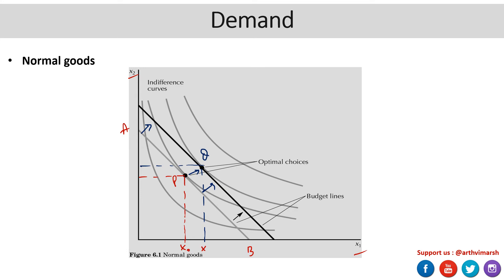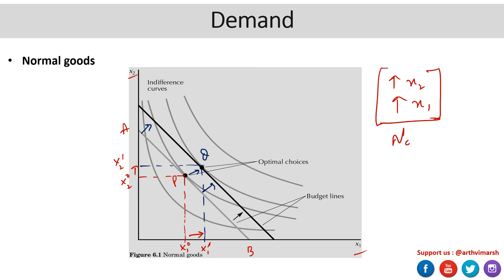At the new optimal point Q, the consumption of both x1 and x2 has gone up. Consumption of x1 increased from x1-naught to x1-prime, and for x2 it went from x2-naught to x2-prime. So there is an increase on both ends. We can infer that both are normal goods, because an increase in M implies an increase in demand for both x1 and x2.